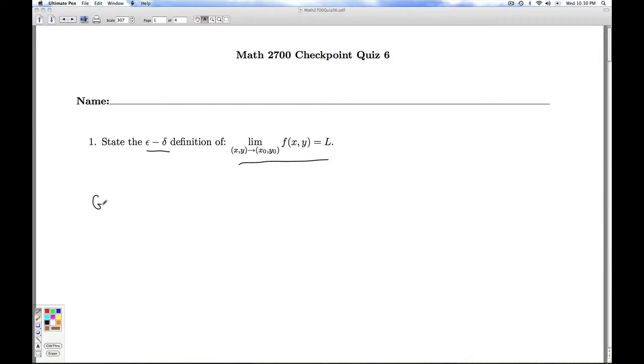This means given epsilon greater than zero, there exists delta greater than zero, so that if zero is less than the square root of x minus x naught squared plus y minus y naught squared is less than delta, then the absolute value f of x y minus l is less than epsilon.